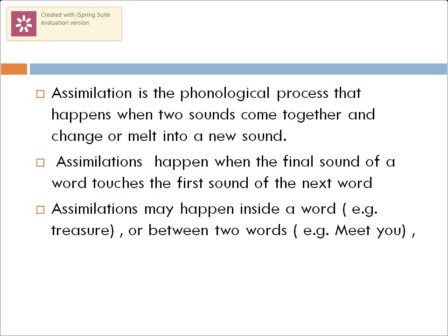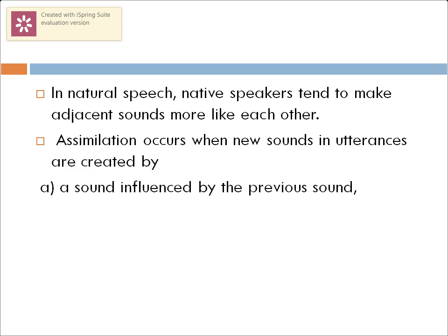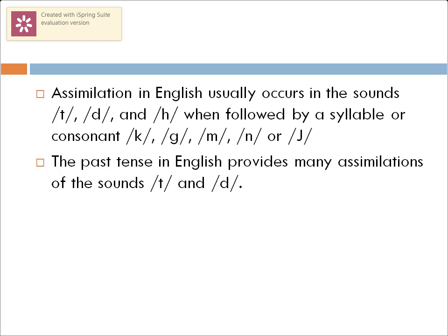In natural speech, when you observe a native speaker speaking, they tend to make adjacent sounds more like each other. Assimilation occurs when sounds in utterances are created by a sound influenced by the previous sound, or by the next sound, or by two sounds influencing each other. Assimilations in English usually occur with the consonant sounds /t/ and /d/ when followed by another consonant sound.